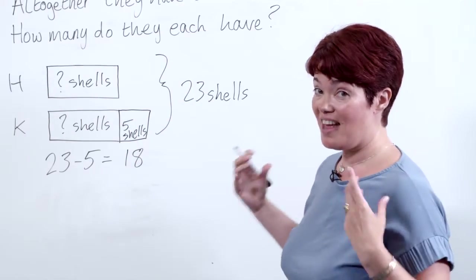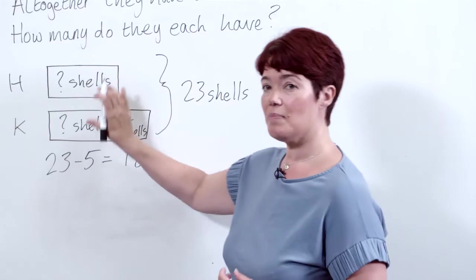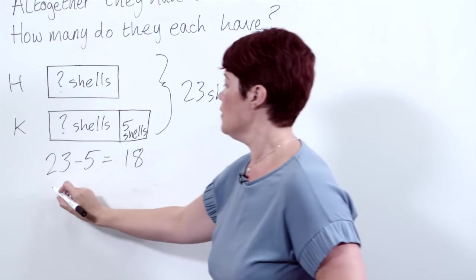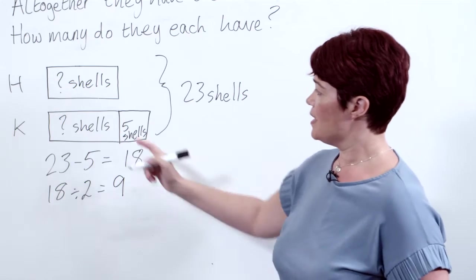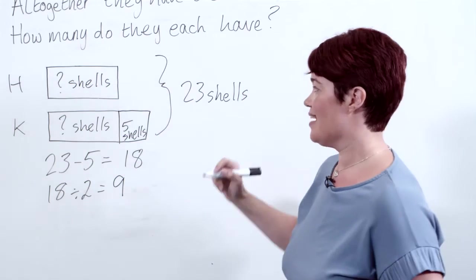Hopefully pupils then realise that we can half it because these bars are the same. 18 divided by 2 equals 9. We now know each of these bars is 9 shells.